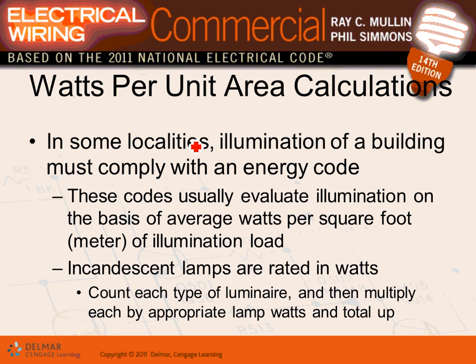Watts per area calculation — you're going to be doing that for the energy code with ComCheck. For an office building, the energy code requires one watt per square foot. The NEC allows up to three-and-a-half volt-amps, but the energy code requires you to maintain one watt per square foot.